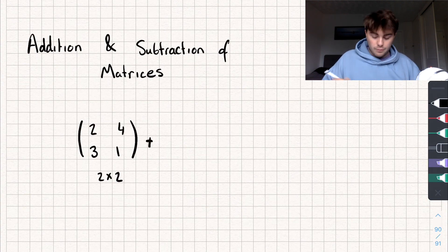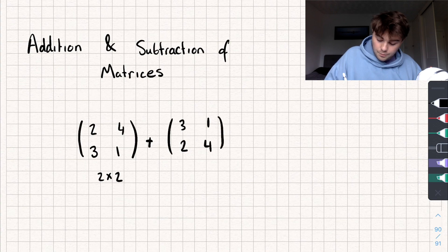So let's look at addition first. So this matrix, let's add on to it this matrix here, 3, 1, 2, 4, which is as I said another 2 by 2 matrix.